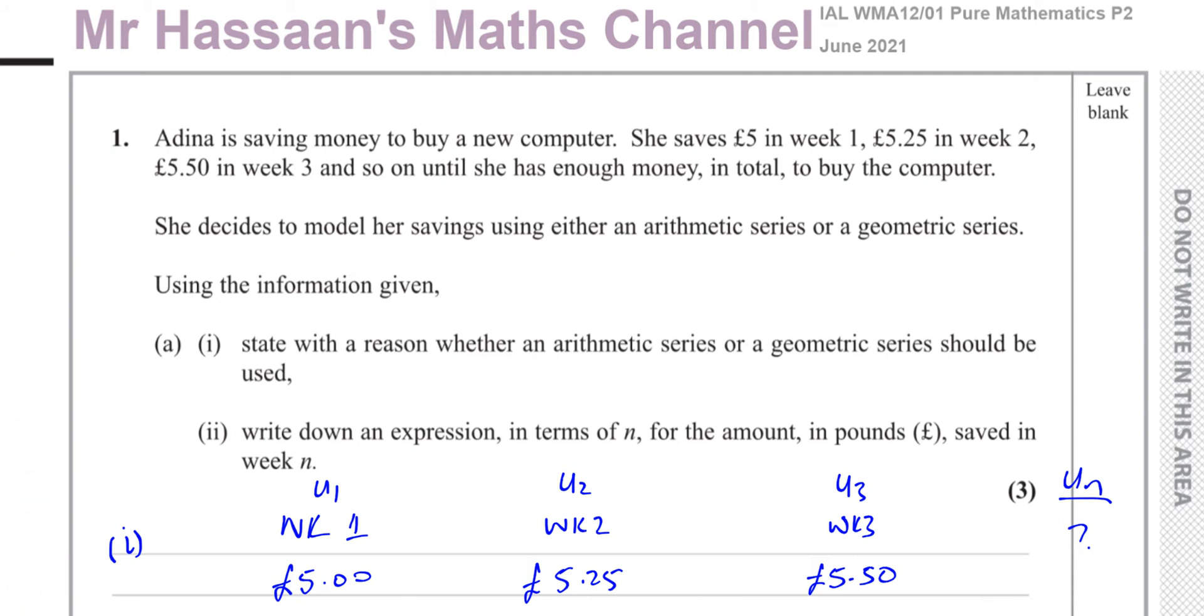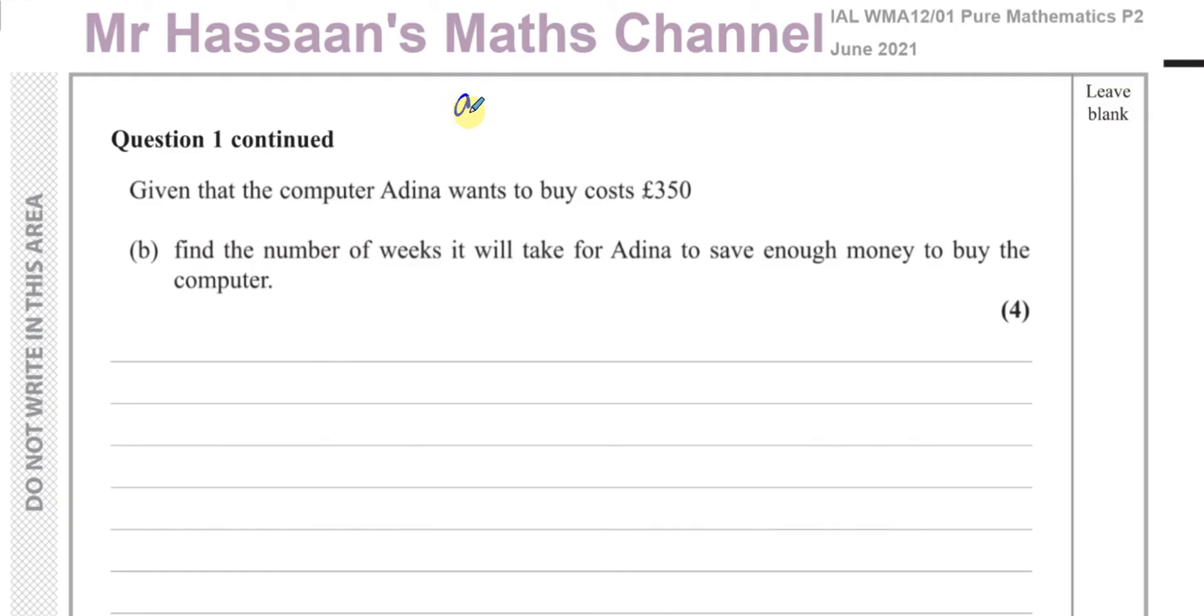Now for part B. Our first term was 5 pounds and our common difference was 0.25 pounds. Given that the computer Adina wants to buy costs 350 pounds, find the number of weeks it will take for Adina to save enough money to buy the computer. Here we've got to think about the sum of the terms every week as they build up, not just the amount in a particular week.